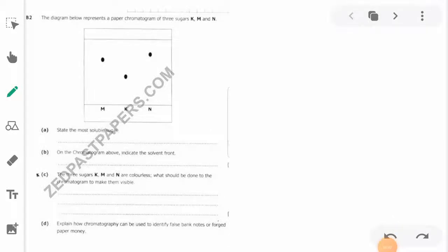Hello, welcome to this video. I'm Peter the tutor. We'll be looking at the 2020 chemistry science paper 2, question B2, on chromatography. The question says the diagram below represents a paper chromatograph of three sugars.